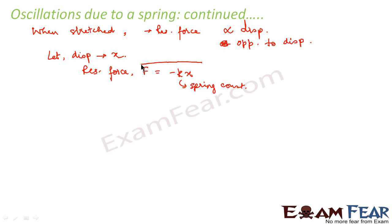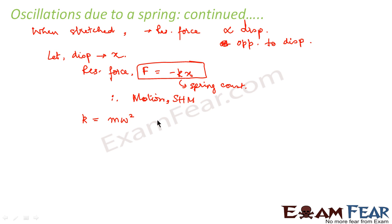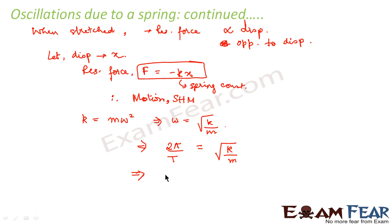If you look at this equation, it is the same equation as that of the force law, which means that this motion is simple harmonic. So mathematically we have also proved that the oscillations of a spring are simple harmonic. Here k equals m times omega squared, or we can say omega equals root over k by m. Now we know that omega equals 2π divided by capital T, which equals root over k by m, so the time period T equals 2π times root over m by k.